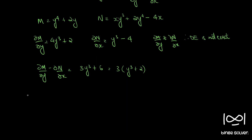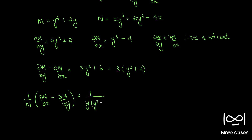So we can divide this with M. In that case, we use the formula 1 by M into dou N by dou x minus dou M by dou y, and see whether it's a function of y alone. So 1 by M becomes 1 by y into y cubed plus 2, into minus 3 into y cubed plus 2. Since we took dou M by dou y minus dou N by dou x, we have dou N by dou x minus dou M by dou y, giving minus 3 into y cubed plus 2. So y cubed plus 2 cancels and we have minus 3 by y. This is a function of y alone.